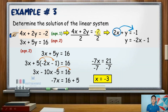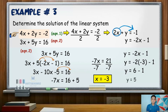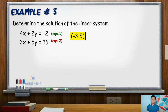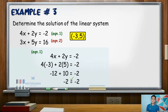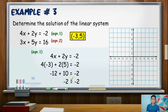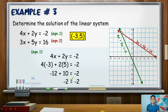Substitute x equals negative 3 into equation 1 expressed in terms of y: y equals negative 2 times negative 3 minus 1. Negative 2 times negative 3 is positive 6, and 6 minus 1 is positive 5. Thus, the solution set for this linear system is (negative 3, positive 5). To verify, substitute the values into original equation 1: 4x plus 2y equals negative 2. That gives 4 times negative 3 plus 2 times 5, which is negative 12 plus 10, equaling negative 2. Hence, the solution set (negative 3, positive 5) is confirmed correct. The graph shows the point of intersection at coordinate (negative 3, positive 5). Thank you for watching. God bless.